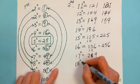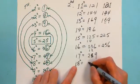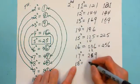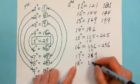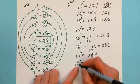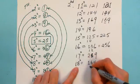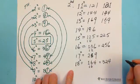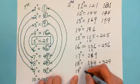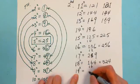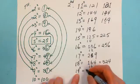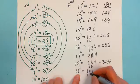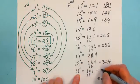18 squared: 1 squared is 1, 8 squared is 64. 2 times 8 equals 16. Carrying gives 324. And 19 squared: 1 squared is 1, 9 squared is 81. 2 times 9 is 18. Carrying gives 361.